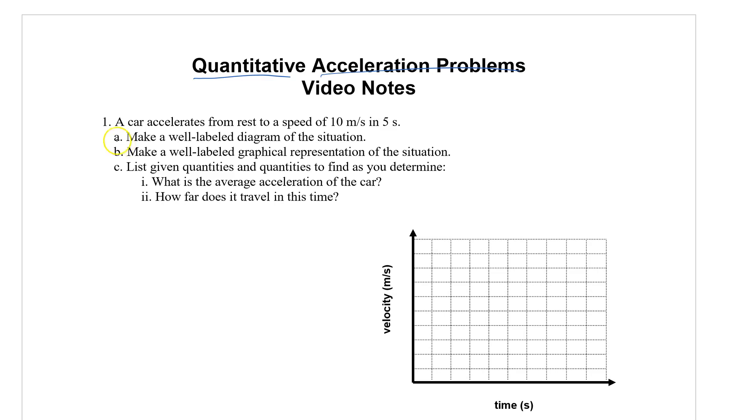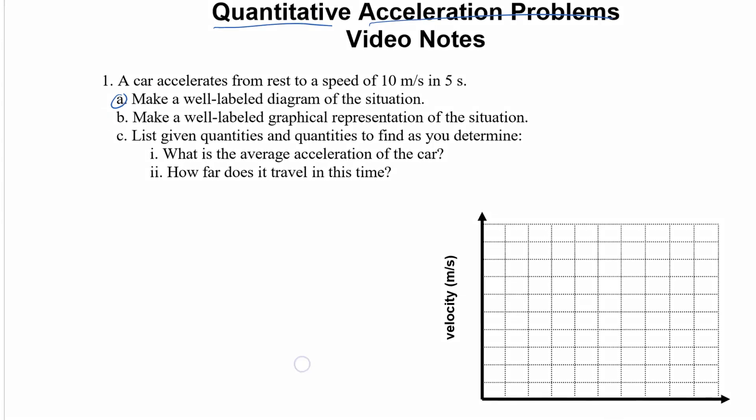First of all, make a well labeled diagram of the situation. Well we have different ways of doing diagrams. How about a motion map? Let's do one of these motion maps here. So it starts from rest. I'm gonna say that this is going to be my positive direction. It doesn't say in here that it's going in the positive direction, but I'm just gonna say let's keep it simple. Let's say it starts at the origin.